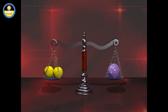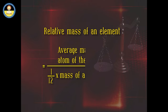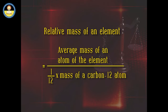We know that certain elements have isotopes. Therefore, the Relative Atomic Mass of an element is the average mass of all isotopes of the element. Mathematically, Relative Atomic Mass of an element equals the average mass of an atom of the element divided by one-twelfth the mass of a carbon-12 atom.